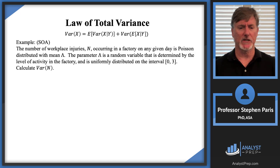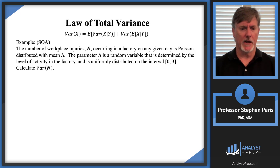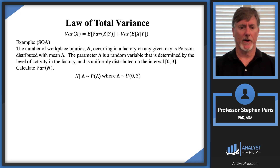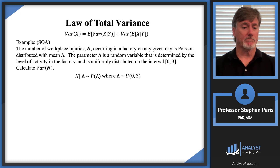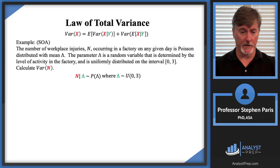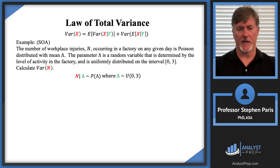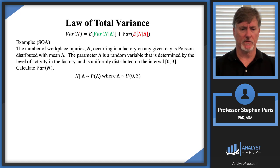This is the problem from the continuous mixtures video: cap N given cap lambda is a Poisson random variable with parameter cap lambda, where cap lambda is uniform over the interval from zero to three. I'd like to calculate the variance of cap N. I apply the law of total variance with cap X replaced by cap N and cap Y replaced by cap lambda, giving: variance of cap N equals expected value of variance of cap N given cap lambda, plus variance of expected value of cap N given cap lambda.